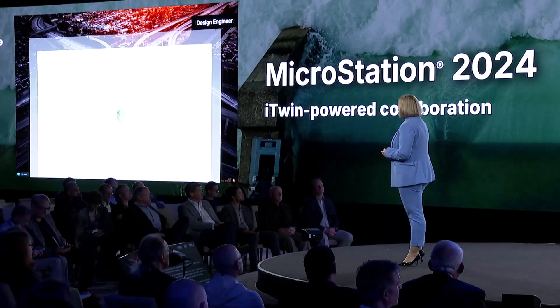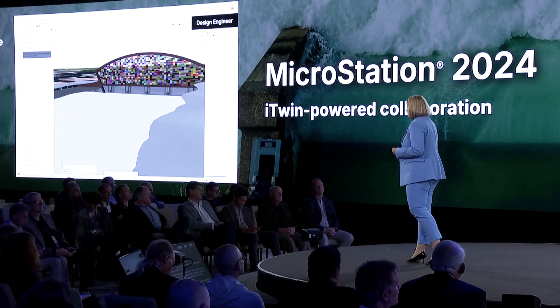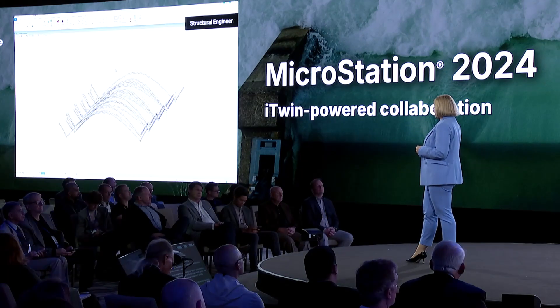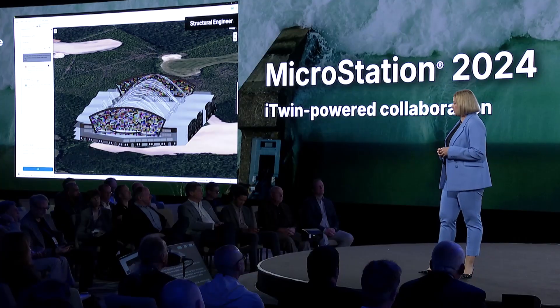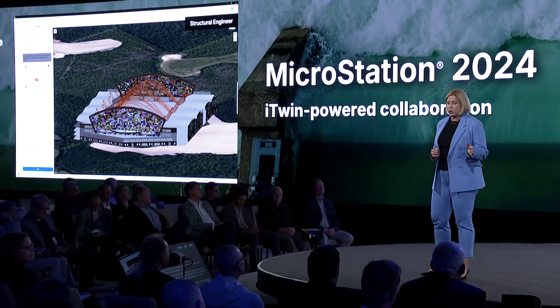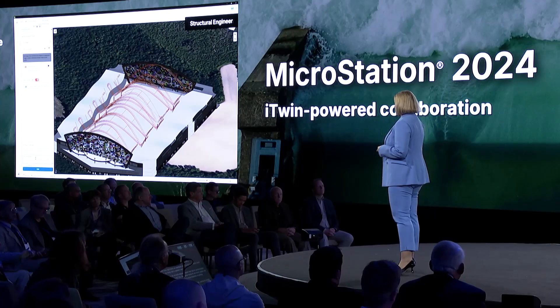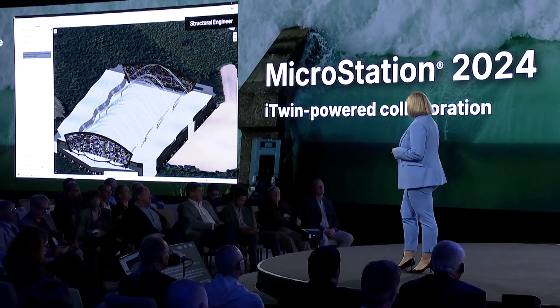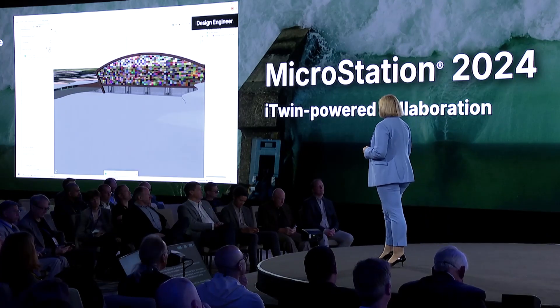Here, a designer and a structural engineer are collaborating. Because these applications are seamlessly linked via the iTwin platform cloud services, the design data is automatically updated in the iTwin. At the same time, the structural engineer prepares their data for synchronization, and before transferring this to the iTwin, the engineer checks for any recent updates and downloads the latest version. This creates a visual comparison of pending changes with the current status updates. Once satisfied, only the actual delta is uploaded to the iTwin, making the transfer incredibly fast and efficient.